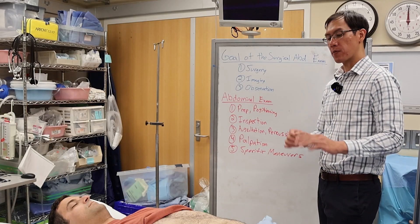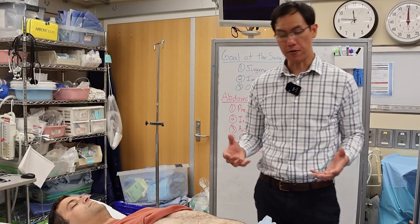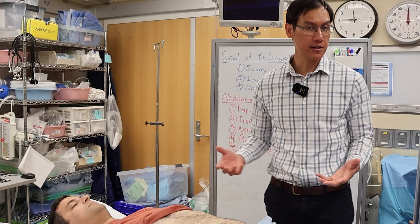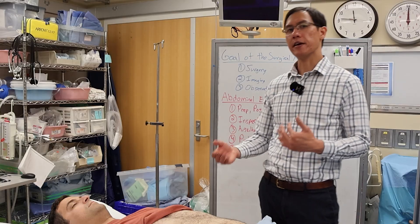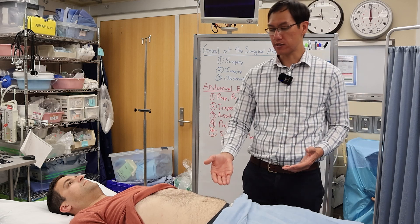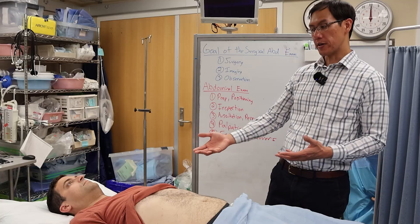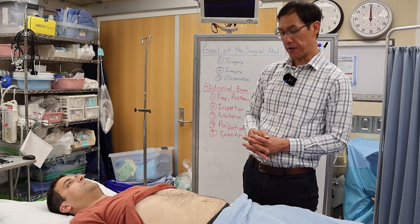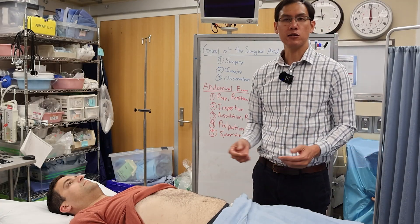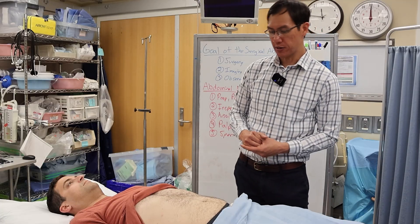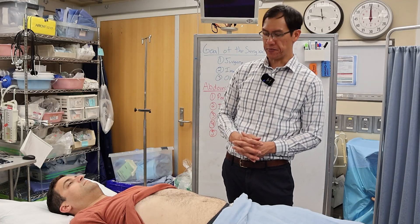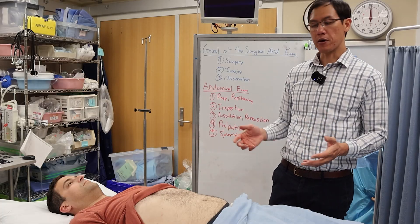The first step before palpation is inspection. Based on the history, you should know whether they've had prior surgeries or feel distended. Inspection lets you see if the history correlates with what you can visually observe — for example, spotting a scar the patient didn't mention. Look for visible distension, fluid, large veins suggesting portal hypertension, or a protruding umbilical hernia that is red, angry, and painful. All this should be assessed before palpation.